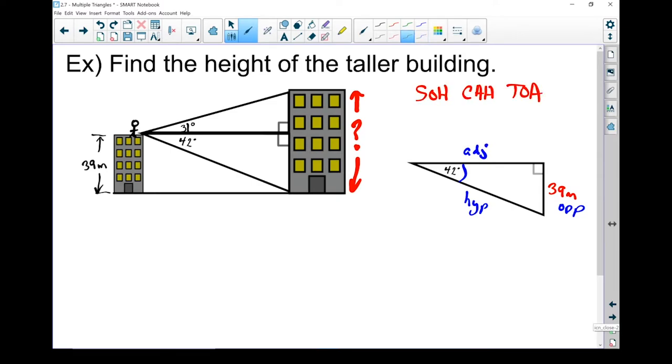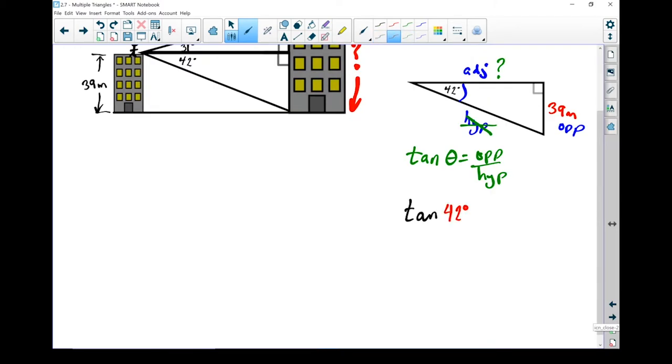I'm going to write down Sohcahtoa. Let's figure out which trig ratio we need to use. Keep in mind, I want to find my adjacent side because that's the side that's common between both of the triangles. So I know my opposite. I don't know my hypotenuse. And to be honest, I don't really need it. So anything with hypotenuse isn't useful to us right now. Sine has a hypotenuse, so we'll skip that one. Cosine has a hypotenuse, we'll skip that one. This is a tangent question. Tan of theta equals opposite over adjacent. Tan of 42 degrees equals my opposite side, which is 39 meters, all divided by... This is the part I don't know. I'm going to call it the adjacent side.